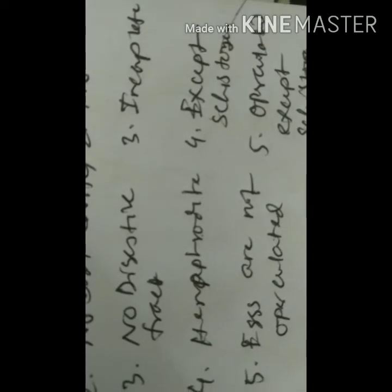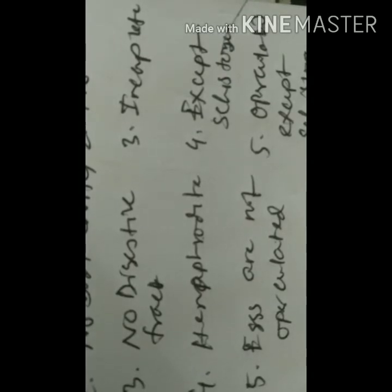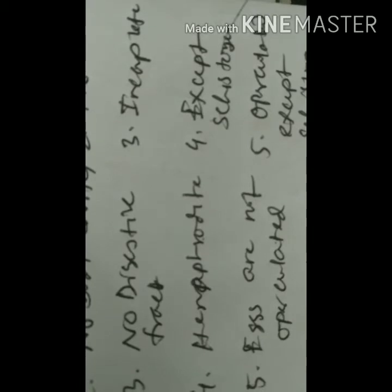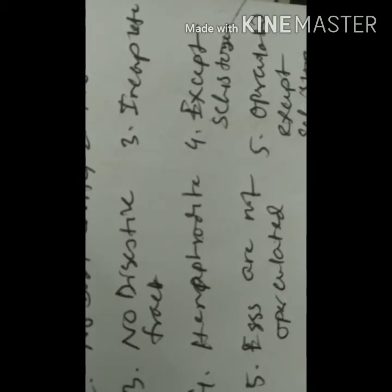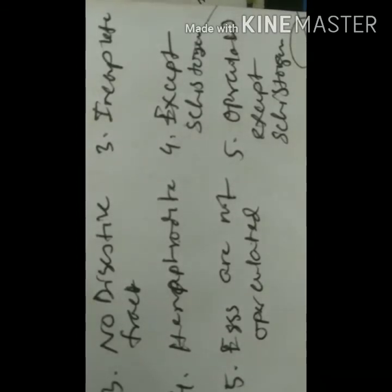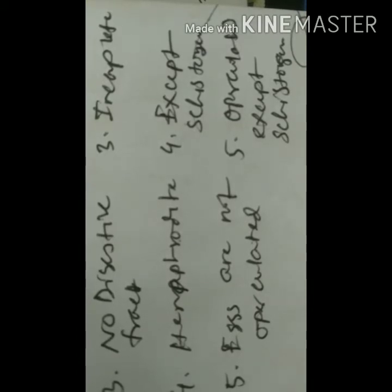Both Cestodes and Trematodes are hermaphrodite, meaning the same worm contains both male and female sexual organs and is capable of fertilizing its own eggs. In Trematodes, all genera and species are hermaphrodite except the genus Schistosoma, which has separate sexes. Regarding eggs, Cestode eggs are not operculated, while Trematode eggs are operculated — meaning there is a cover on the egg, like the cover of a capsule — except for Schistosoma, whose eggs are also not operculated.